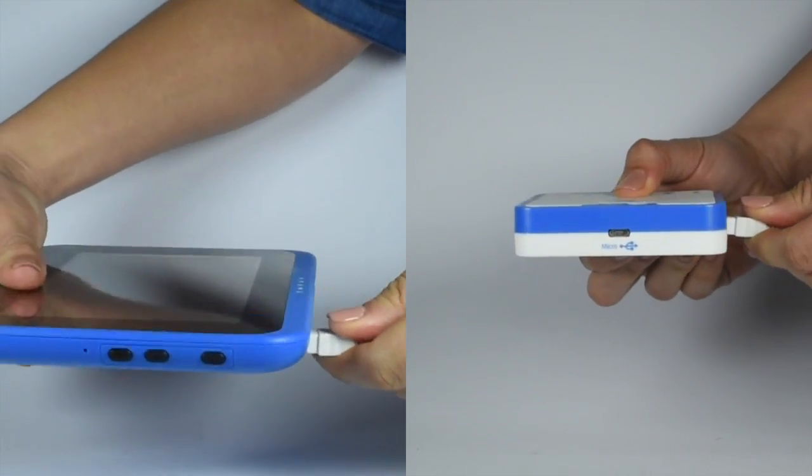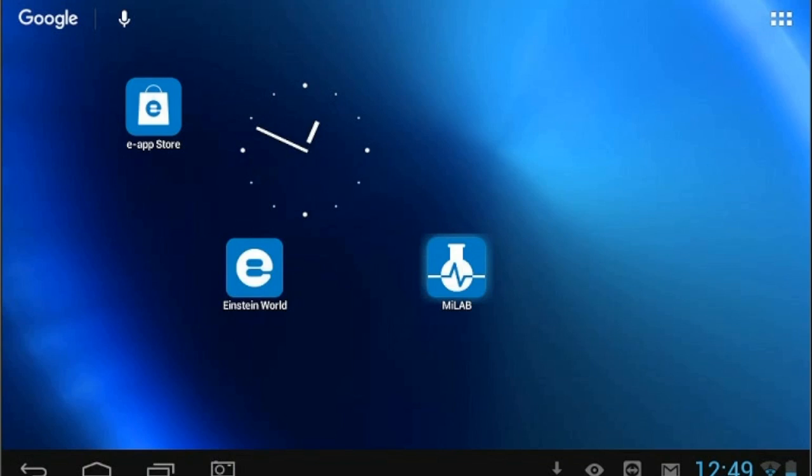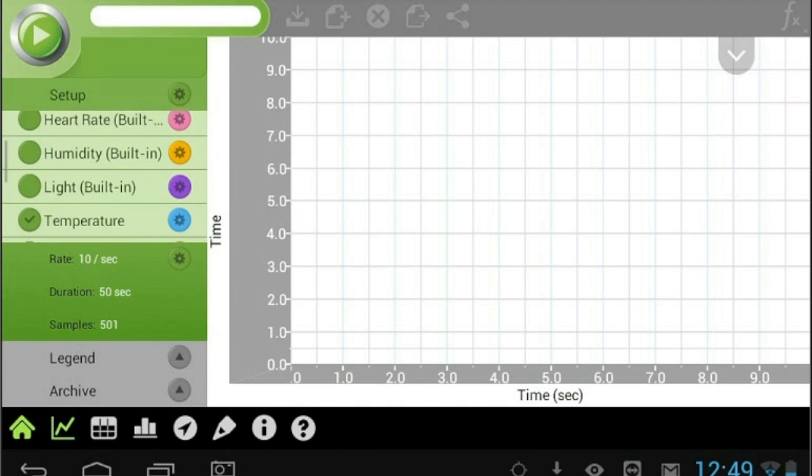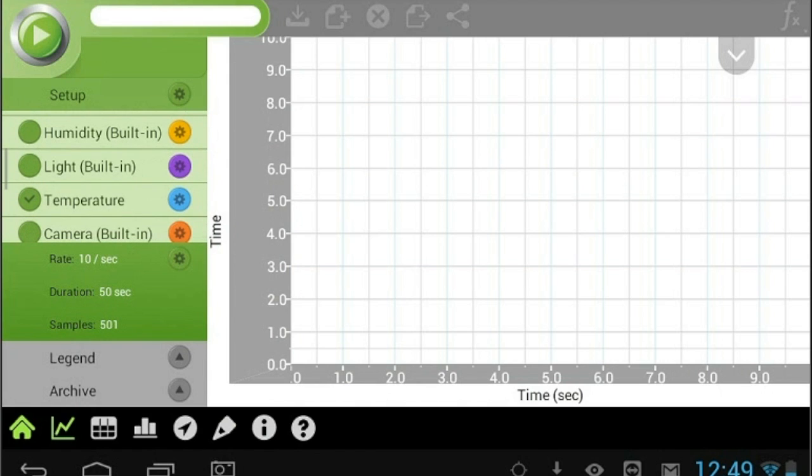Now launch MyLab on either your tablet or desktop. MyLab will automatically detect the sensor. Make sure the icon next to the sensor is checked to enable it for logging.